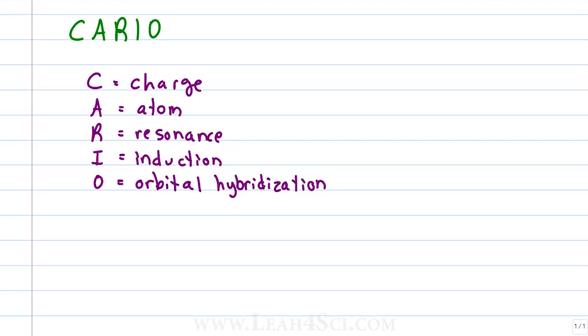In previous videos, we looked at how to rank acids and bases not using pKa values but instead using the mnemonic KARYO, which as a reminder stands for C is charge, A is atom, R is resonance, I is induction or the inductive effect and O is orbital hybridization.